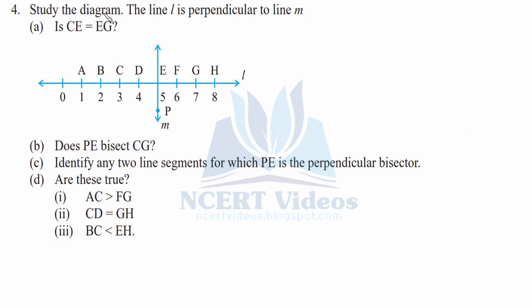Question 4: Study the diagram. The line l - this horizontal one - is perpendicular to line m. This is given to you. Now the question is: is CE equal to EG?